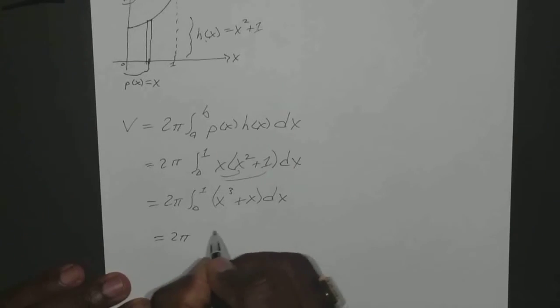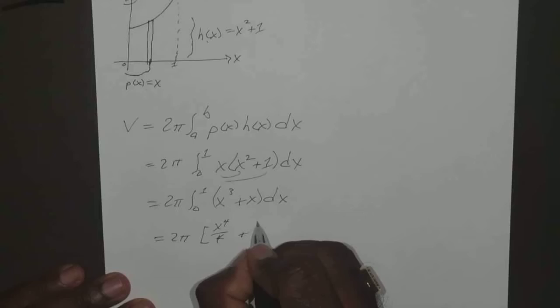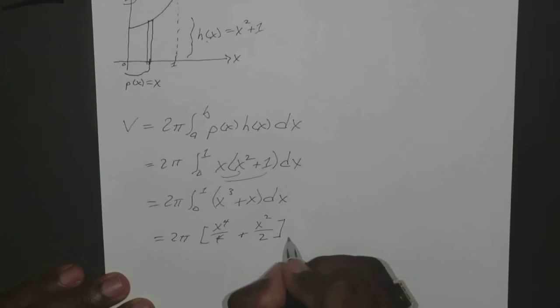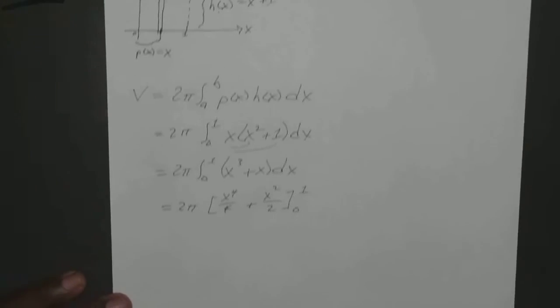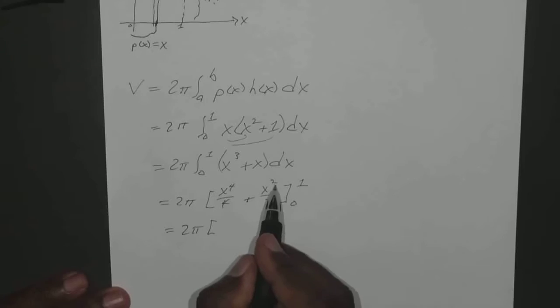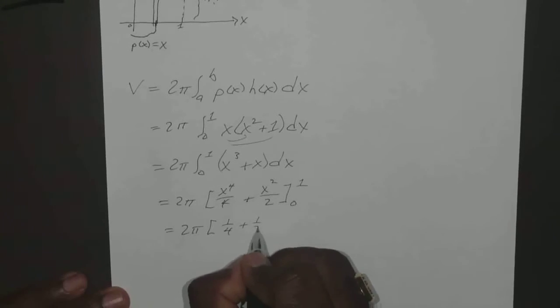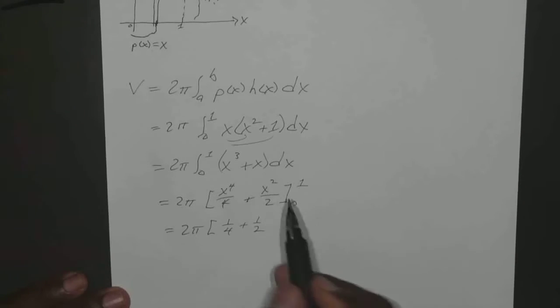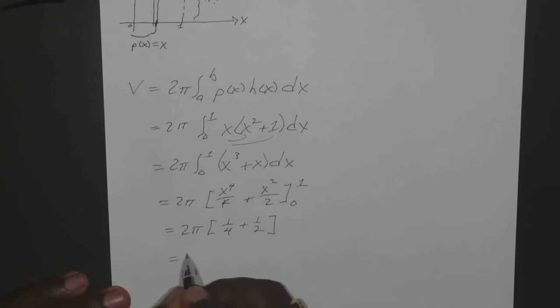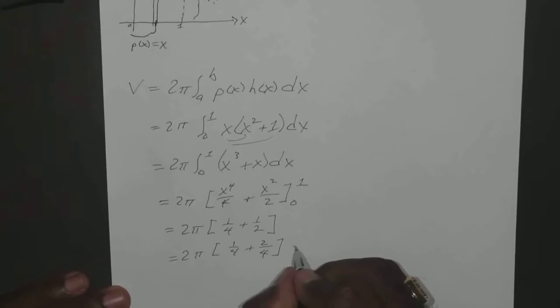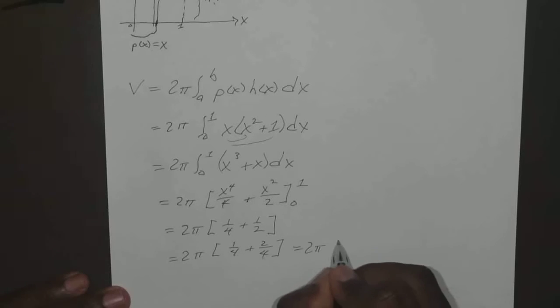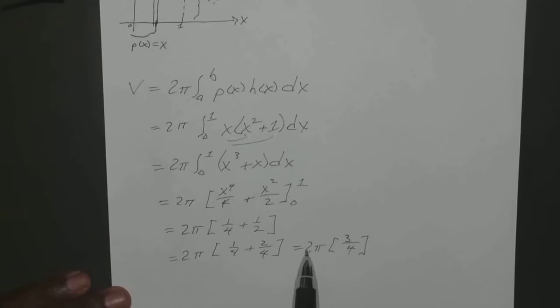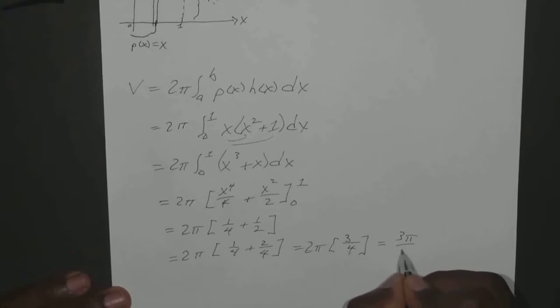Okay, and that gives you your 2π, x cubed is x to the fourth over 4, plus x squared over 2, from 0 to 1. So if you have your 2π, you plug in your 1, you get 1 fourth plus 1 half minus 0 plus 0 is just 0, so you can leave that out. So you end up with 2π, 1 fourth plus 2 over 4, which is 2π times 3 over 4. The 2 and the 4, well the 2 would cancel out and the 4 would become a 2, so you end up with, again, 3π over 2.